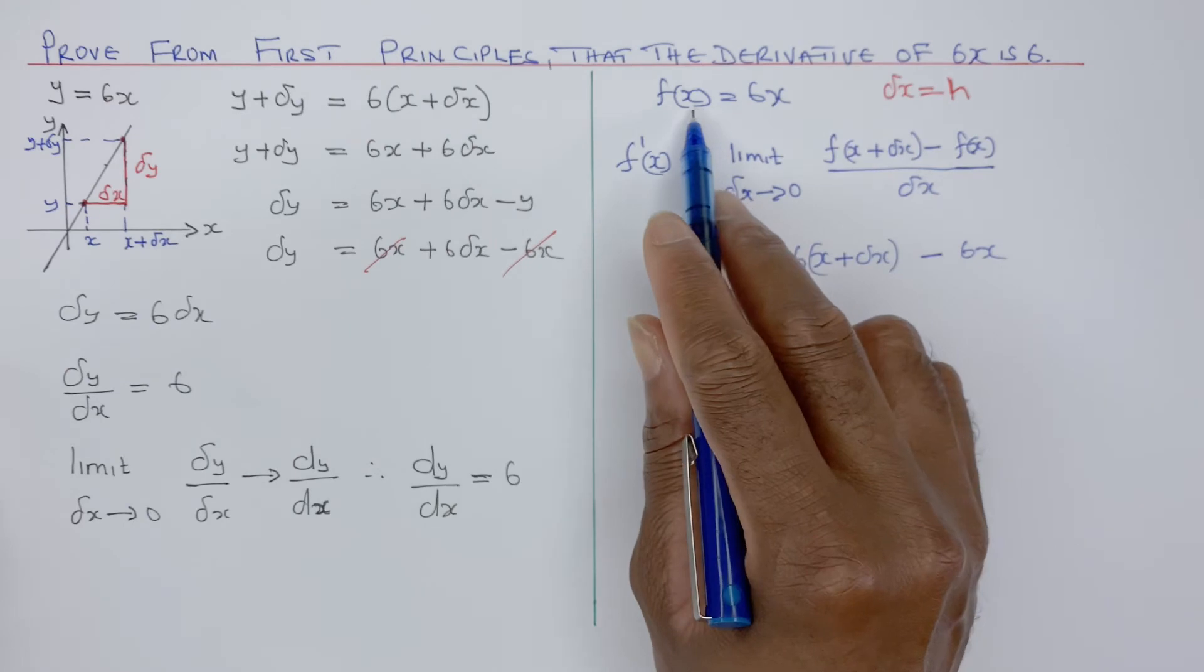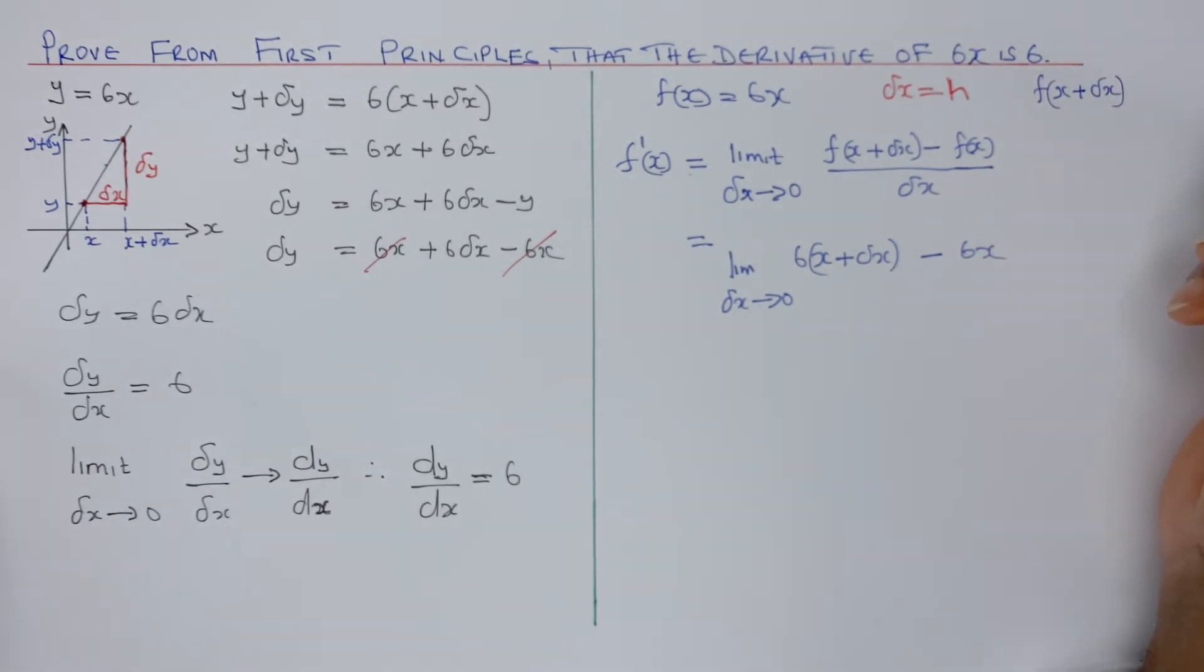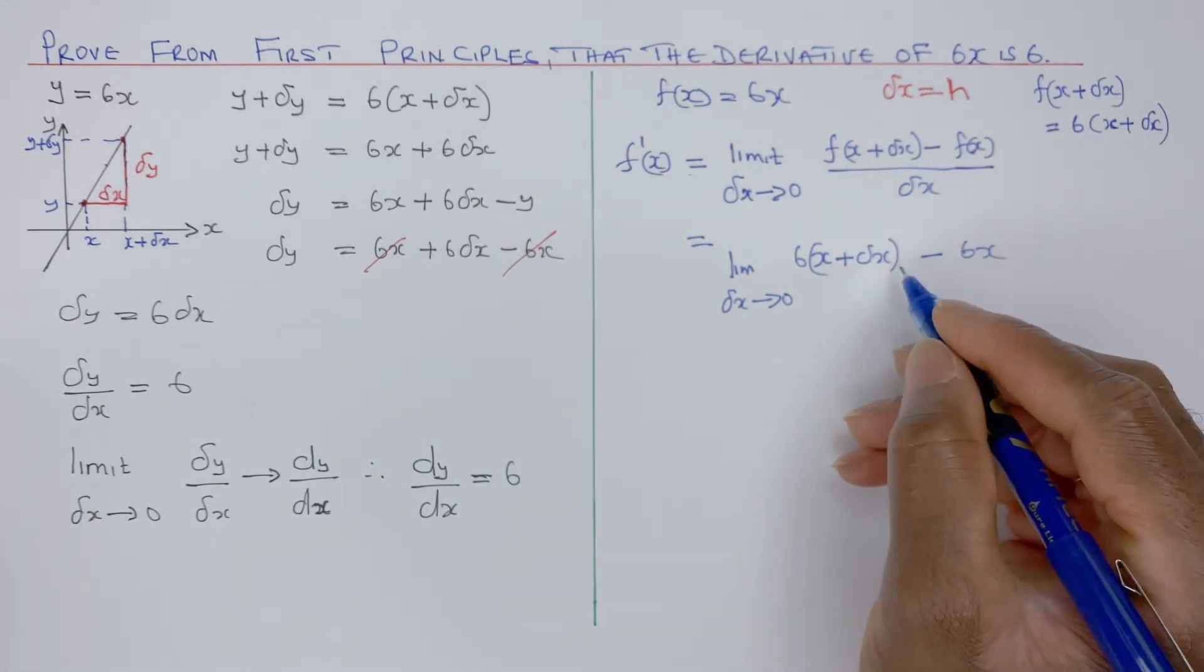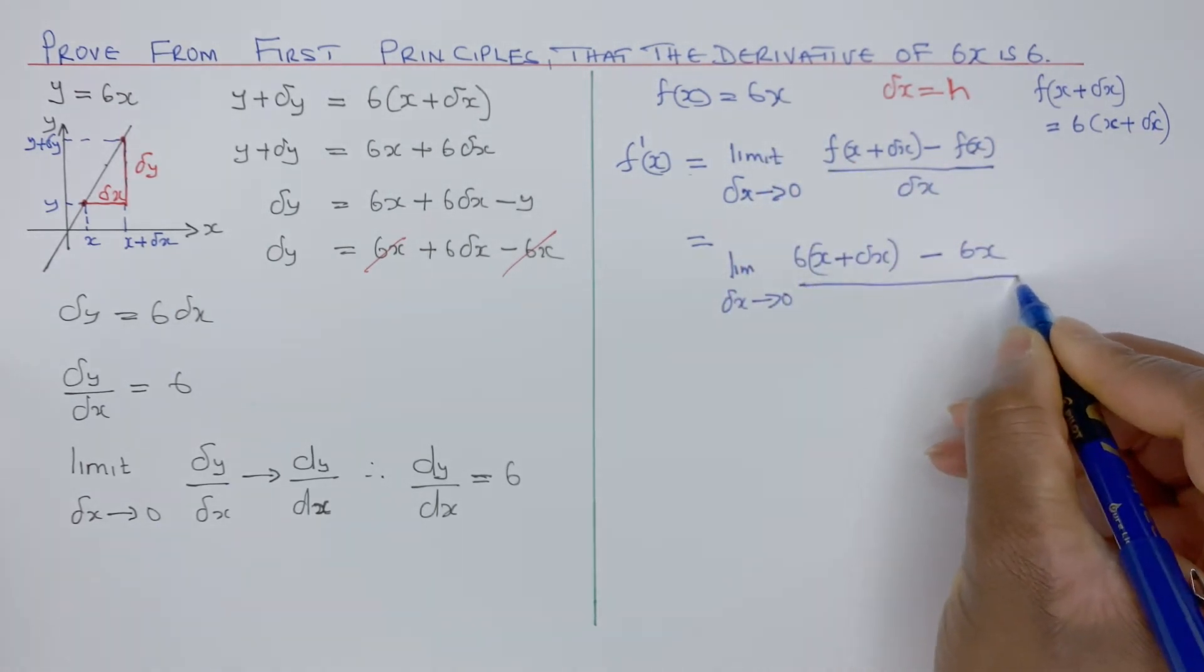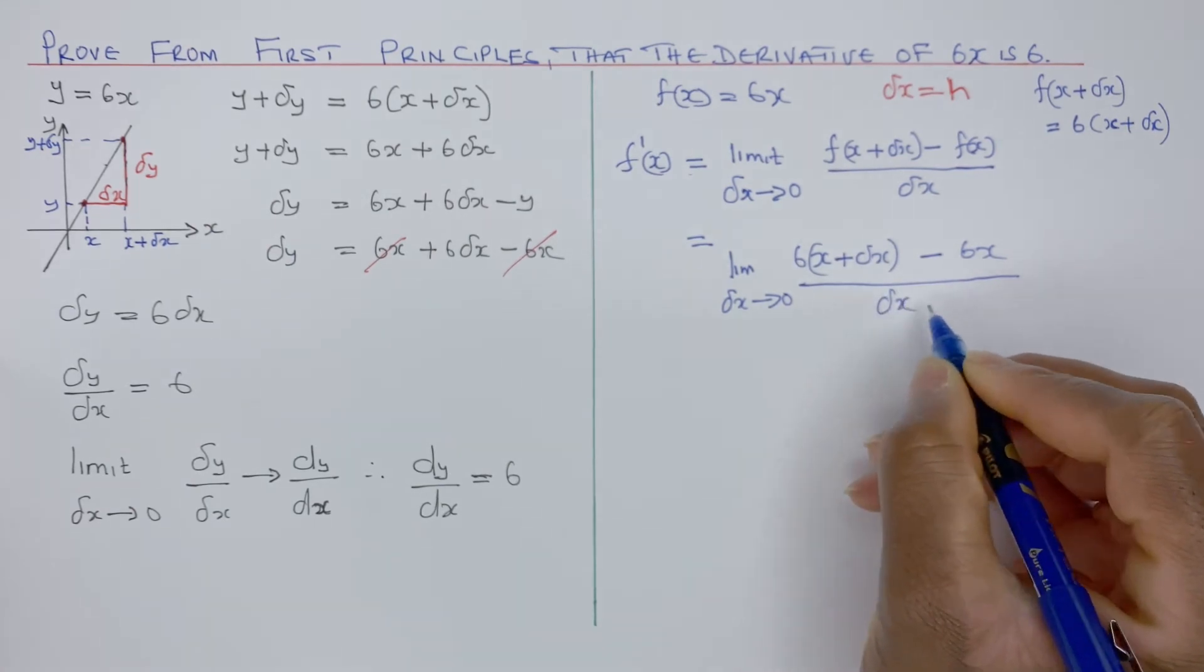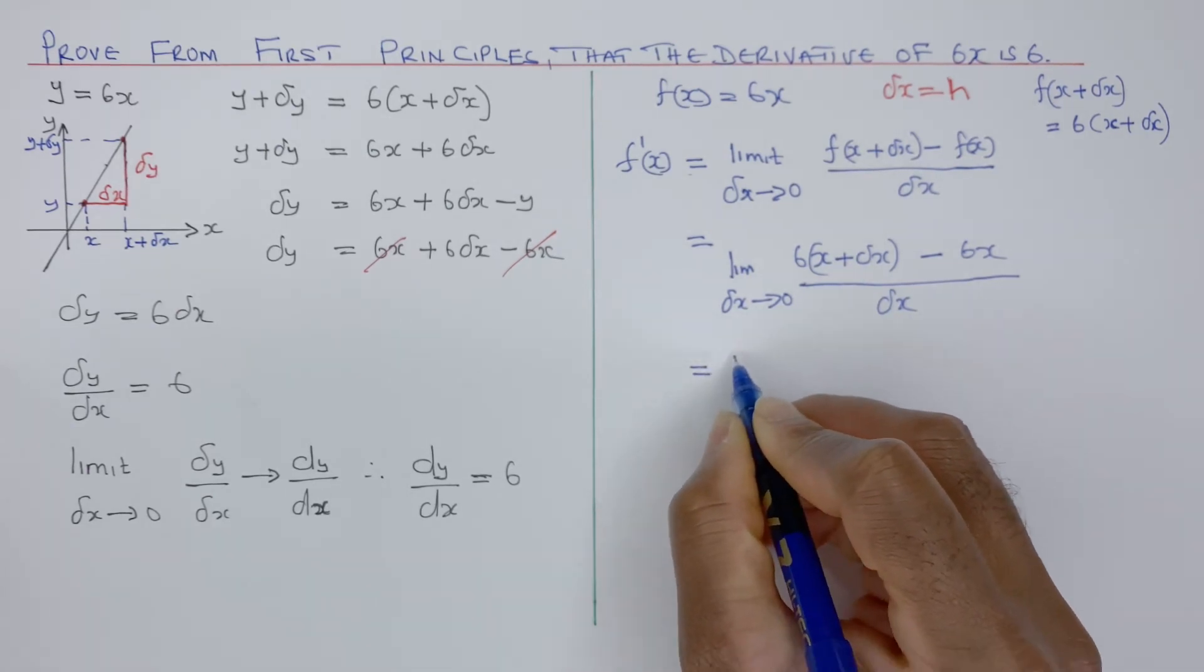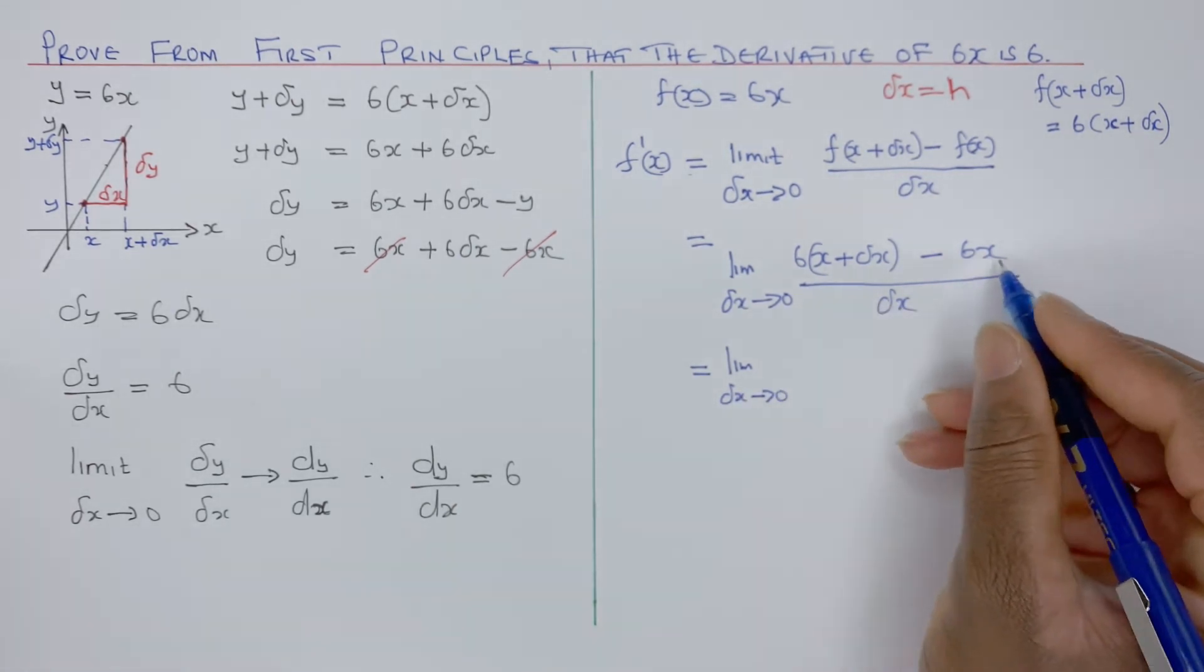If you're going to write that, you're just replacing that. So f of x plus delta x equals 6 times x plus delta x. I'm just putting that here, and I'm replacing that with 6x, divided by delta x, or h. And again, in the limit, delta x tends to 0. So I need to expand that.